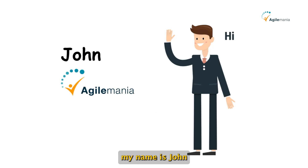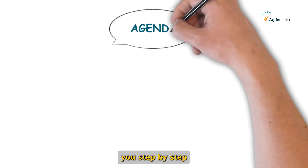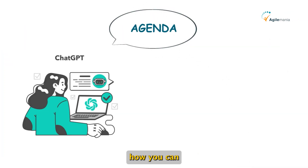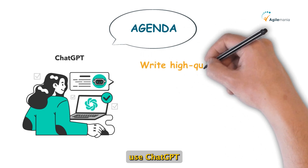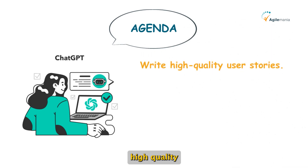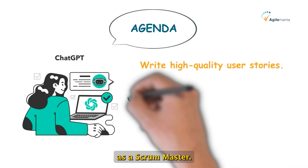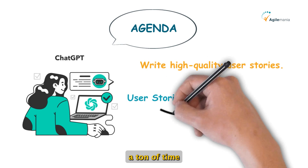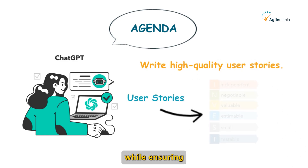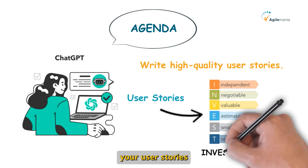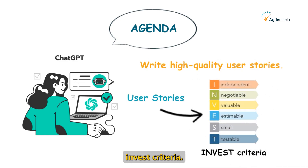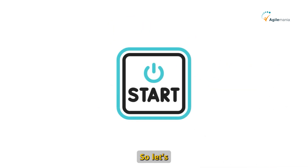Hello, my name is John and welcome to Agilemania. In today's video, I'm going to show you step-by-step how you can use ChatGPT to help you write high-quality user stories as a scrum master. This can save you a ton of time and effort while ensuring your user stories meet the INVEST criteria. So let's get started.